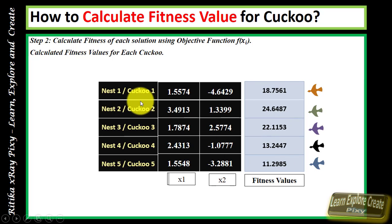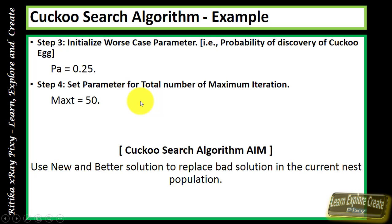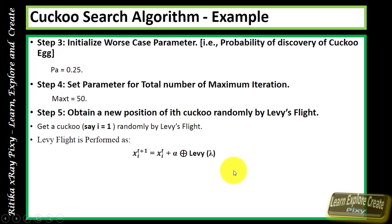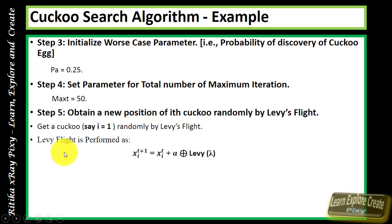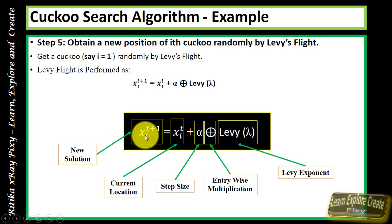After calculating fitness values for all cuckoos, the probability of discovery of the cuckoo's egg by the host bird is set to 0.25. The aim is to use better solutions and replace bad solutions with the best ones in the current population. The next step is to obtain a new position for a randomly selected cuckoo via Lévy flight. I am selecting the first cuckoo, applying Lévy flight, and calculating its new position.